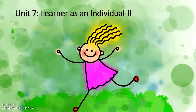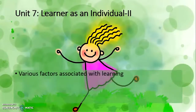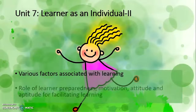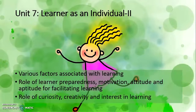Unit Seven is an extension of Unit Six. In this unit we discuss various factors associated with learning, such as learner preparedness, motivation, attitude, aptitude, and other factors that facilitate learning.